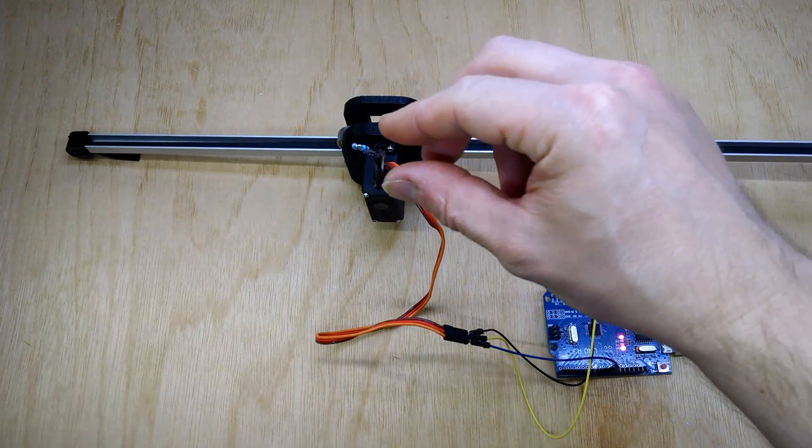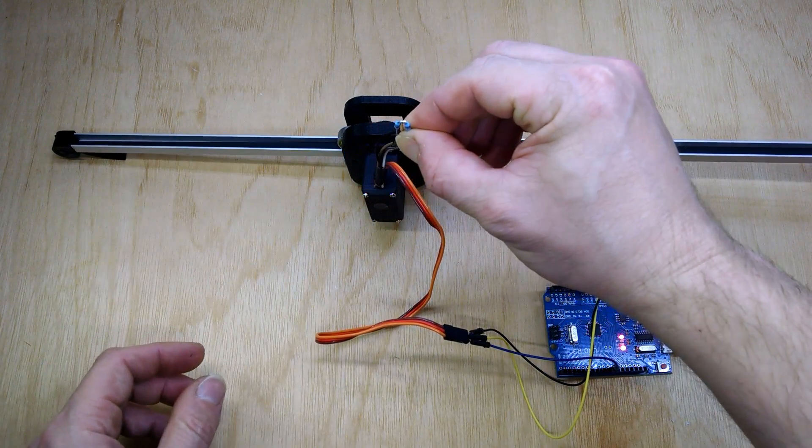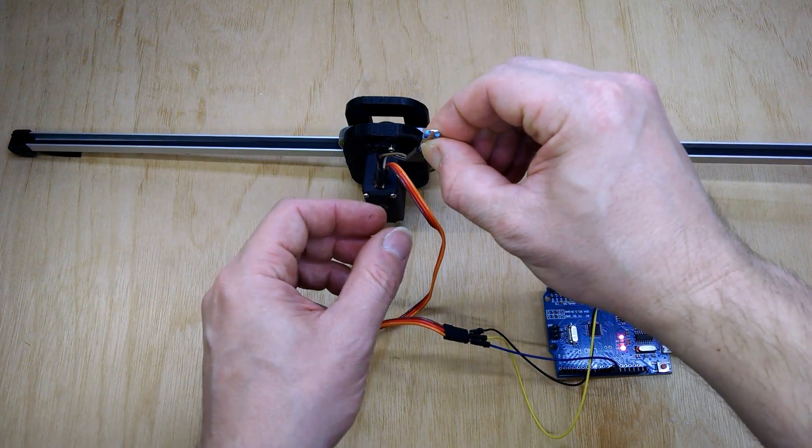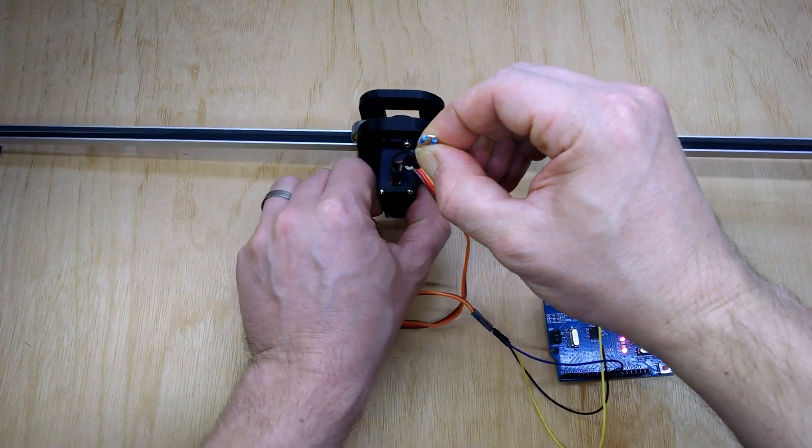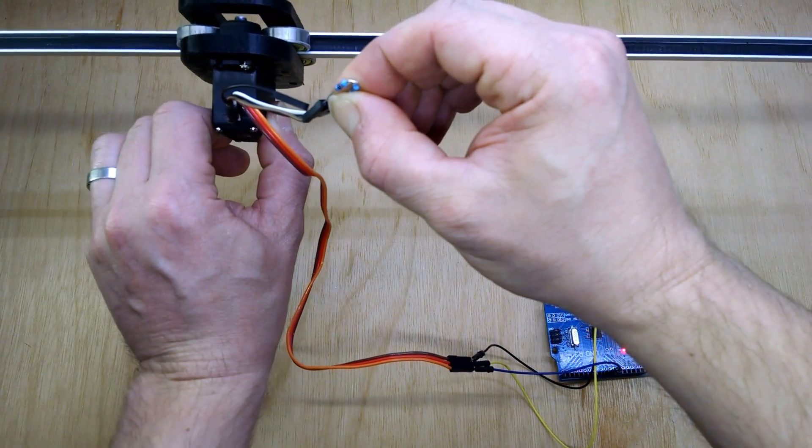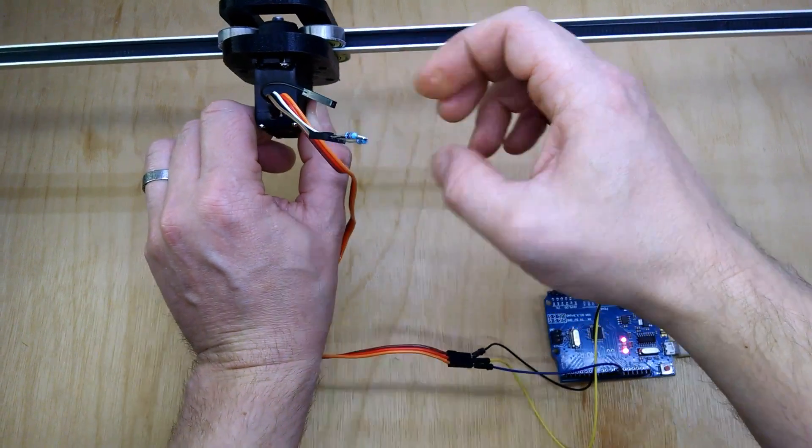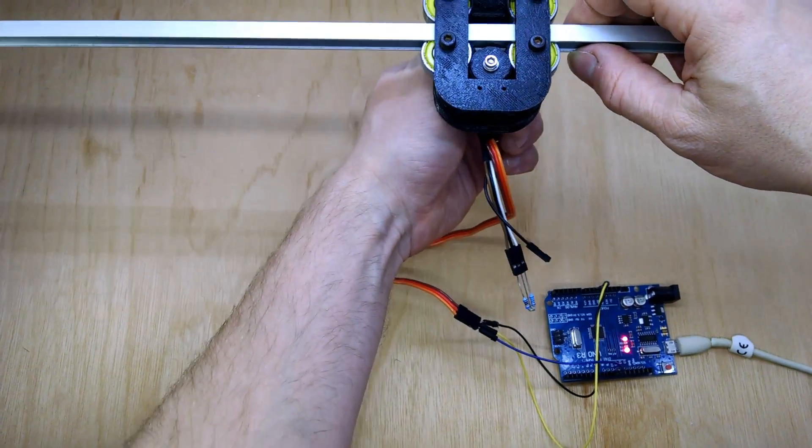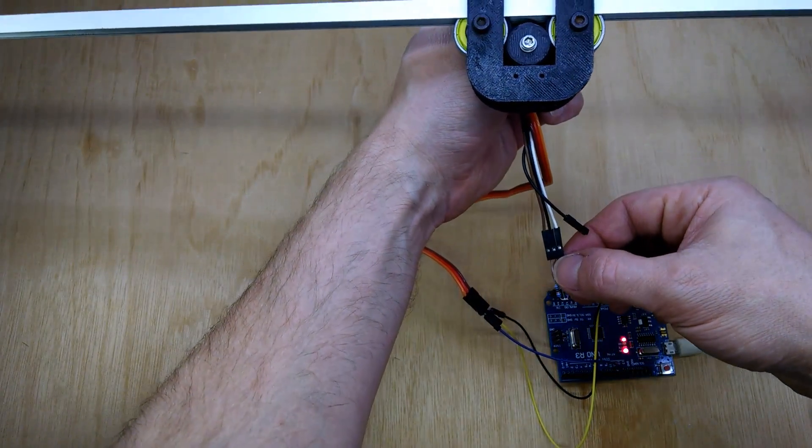There we go. So at the moment I've got a 1m piece of aluminum profile on it, and I'll just rotate that to let you see the mechanism on this side.